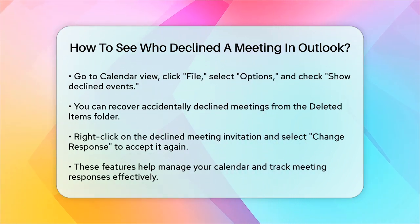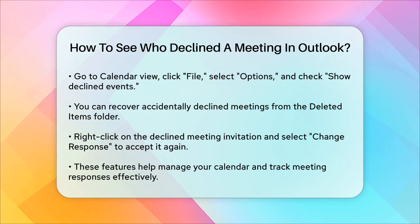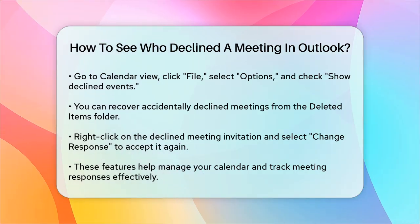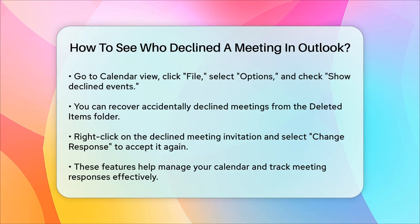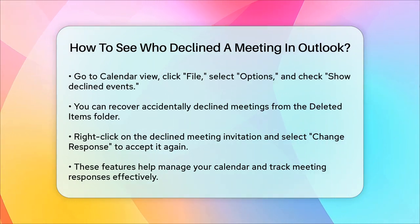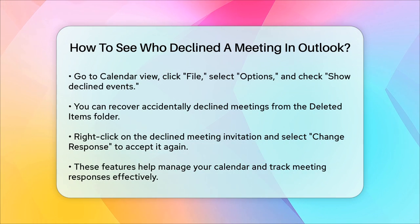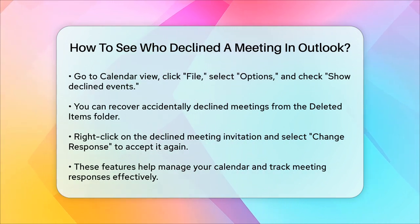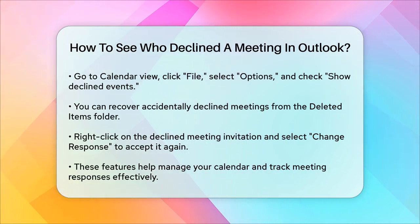Additionally, if you've accidentally declined a meeting, you can recover it from your deleted items folder. Simply navigate to the deleted items folder, find the declined meeting invitation, right-click on it, and select change response. Then choose Accept to add the meeting back to your calendar.